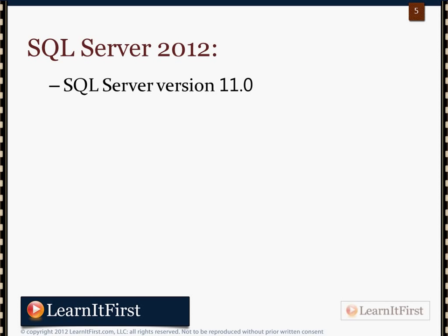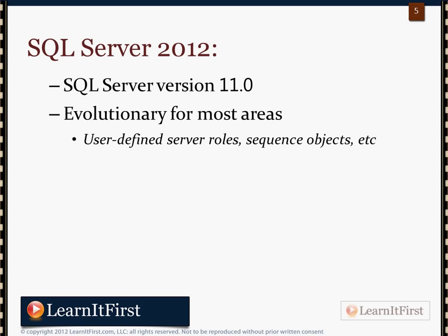SQL Server 2012 is actually version 11.0 if you look at the file versions. This is mostly what I would consider an evolutionary release rather than a completely revolutionary one. SQL Server 2005 was a revolutionary release — it changed a ton of things. SQL Server 7.0 was revolutionary; SQL Server 2000 was evolutionary. That's kind of where we are here. By and large, things work the same way. You're still working with the same set of tools, but there are some new things like user-defined server roles and sequence objects.